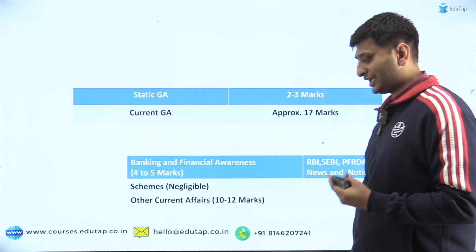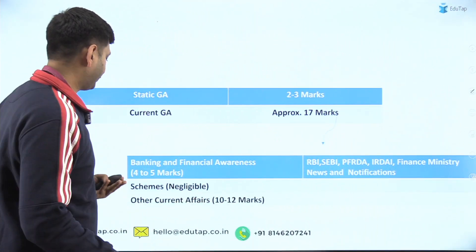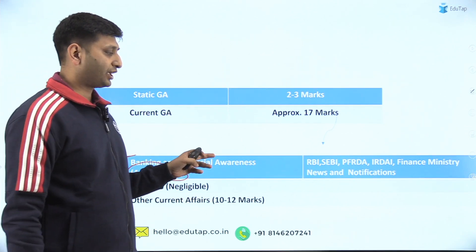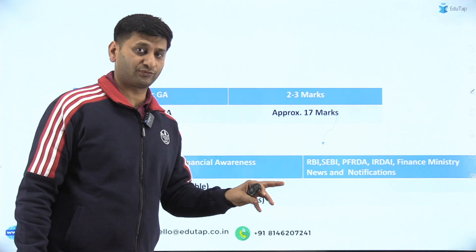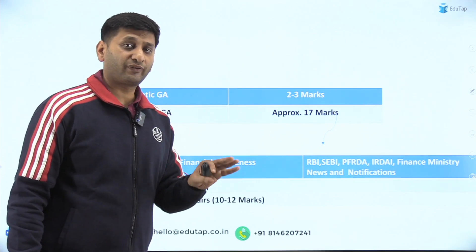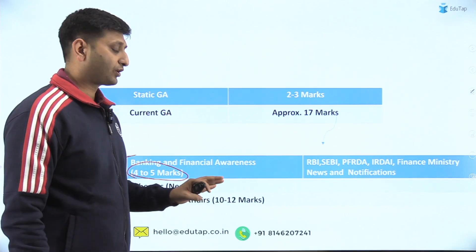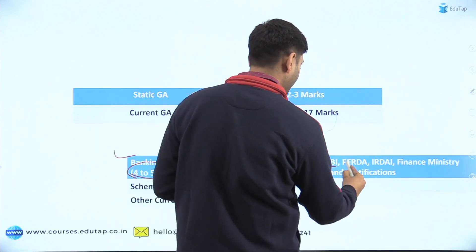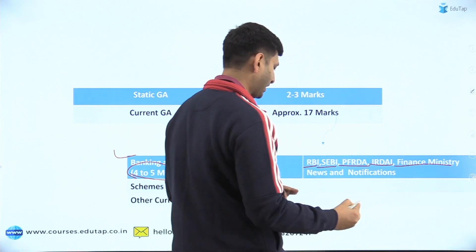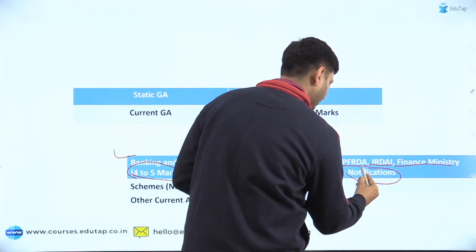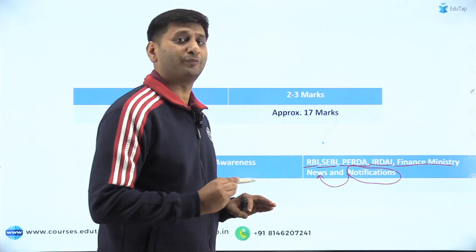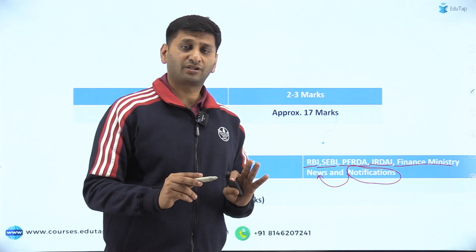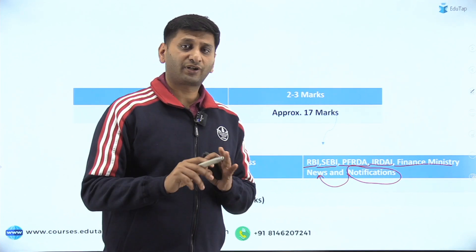In current GA, I would say there are three verticals. One is banking and financial awareness — around four to five months. This is very, very important because banking and financial awareness can even appear in phase two. Though the weightage of current affairs is nil in phase two, if I have to tell you to do one thing related to current affairs, it is banking and financial awareness — specifically news related to RBI, SEBI, PFRDA, IRDA, finance ministry, and notifications related to these as covered in newspapers. We don't need to get into too much technical detail of the notifications; whatever is covered in the newspaper related to that notification is sufficient for us.